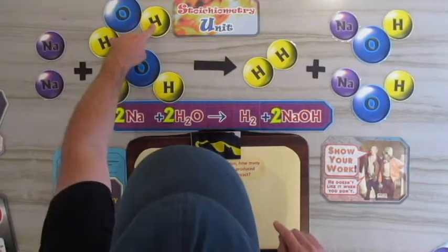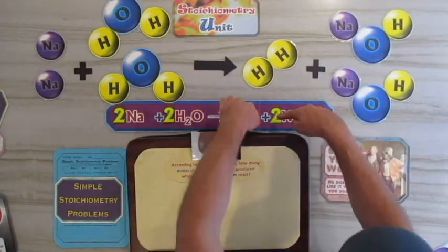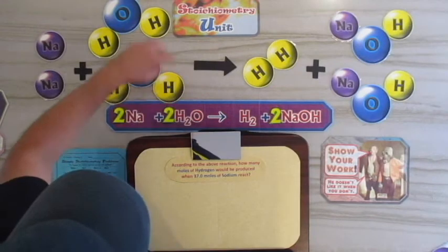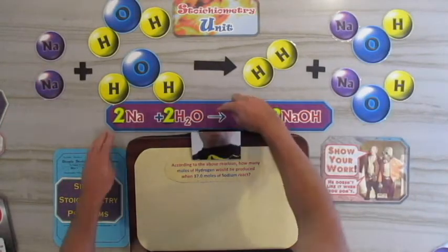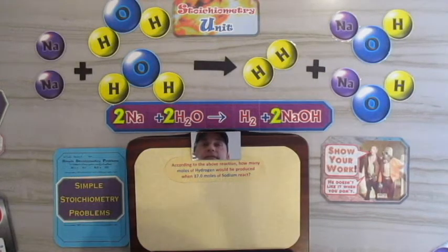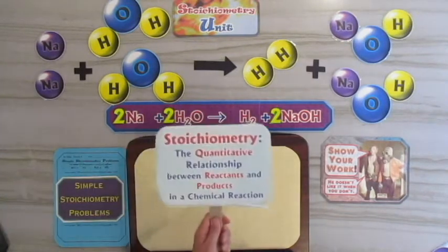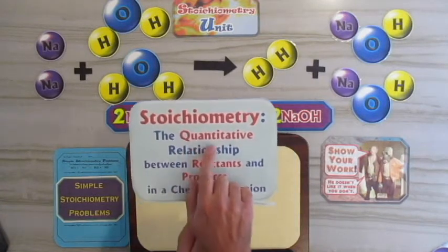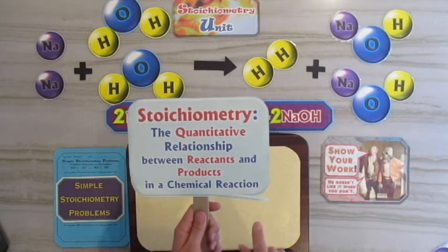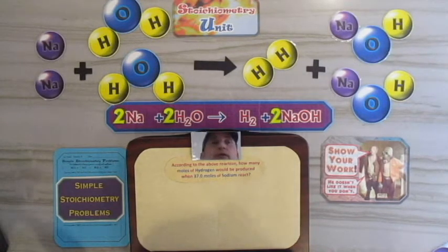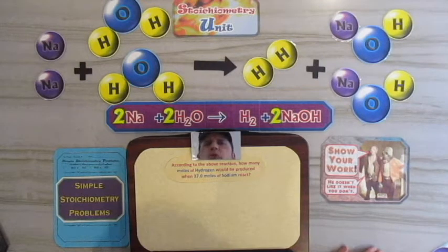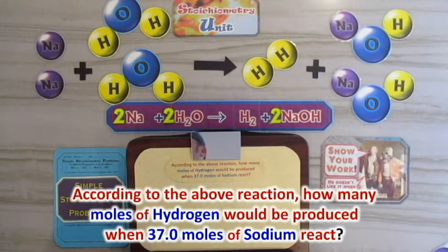Let's verify: two sodium on the left, two sodium on the right — good. Two times two gives four hydrogen on the left, and two times one plus two equals four hydrogen on the right — good. Two oxygen on each side — good. The equation is now balanced. Stoichiometry is the quantitative relationship between reactants and products in a chemical reaction, so now we can work with numbers.